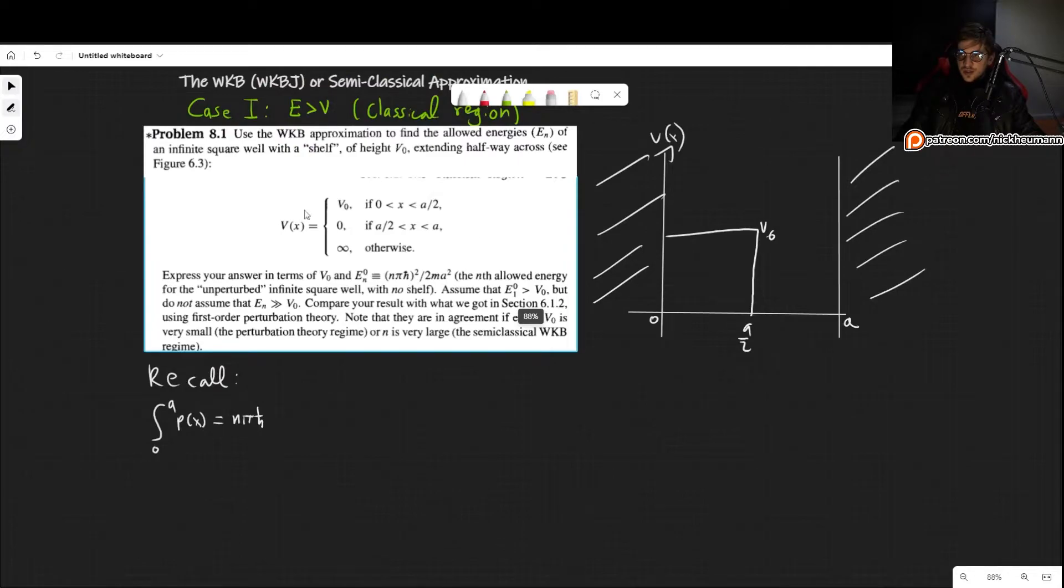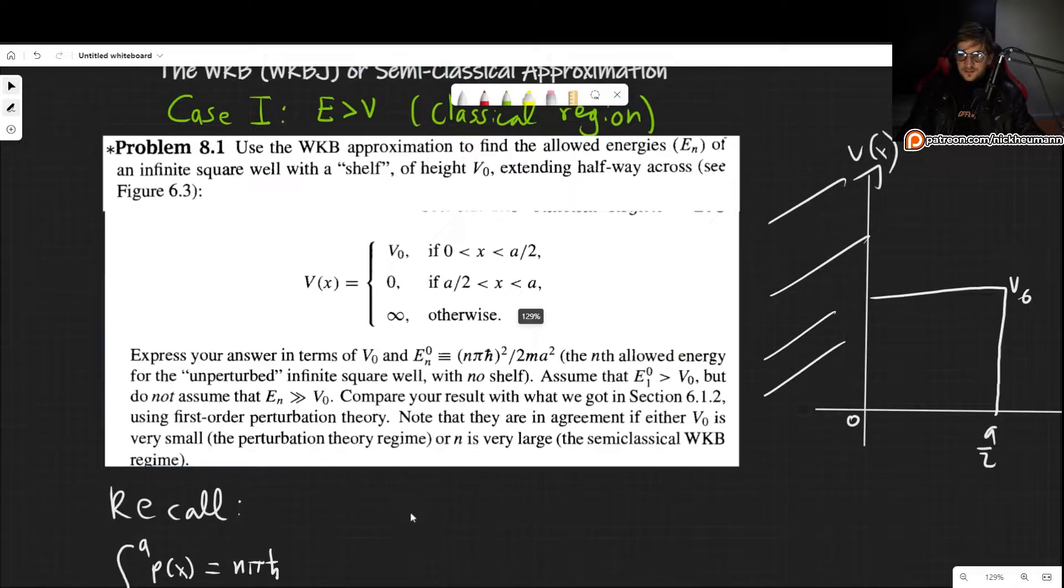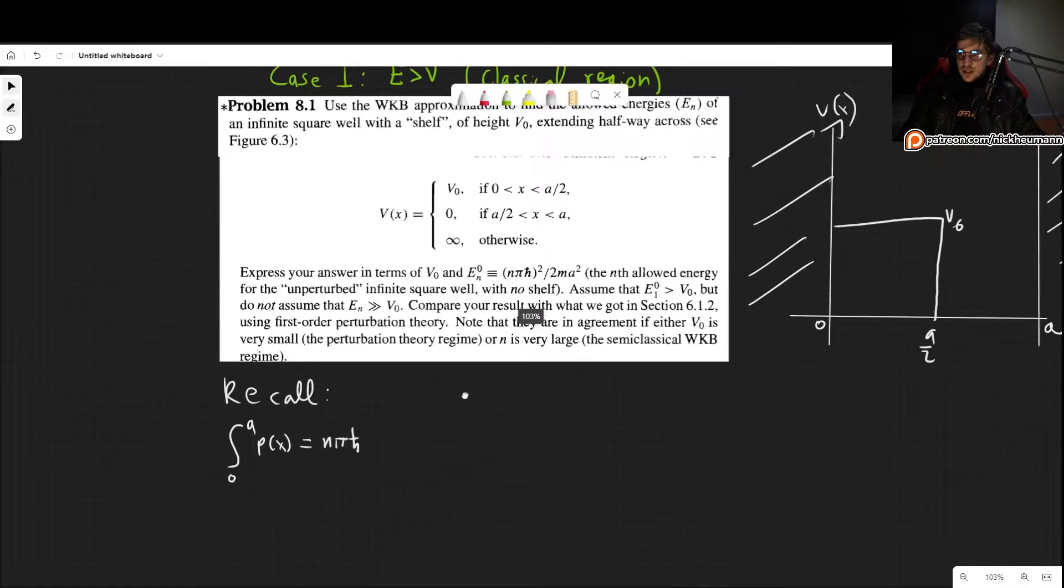So that is what we are dealing with here, and we can see it described right there. We want to express our answers in terms of V0 and the energy of the unperturbed infinite square well with no shelf. We can assume that V0 is smaller than the first energy level of the unperturbed infinite square well, but we cannot assume that the energy overall is greater than V0. Either way, we will then compare our results.